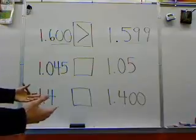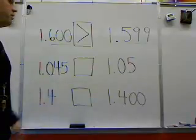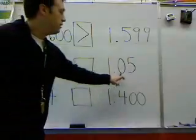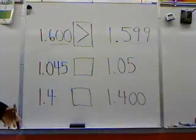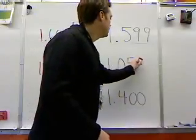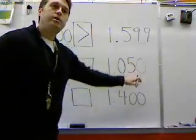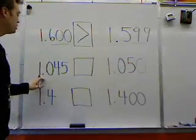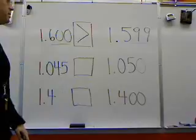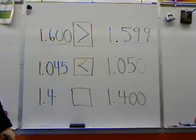We look at this case, we can do the exact same thing. We see that we've got 1 and 45 thousandths versus 1 and 5 hundredths. Well, that's a tough one to start to figure out. So what we can do is add in a zero, and now this number becomes 1 and 50 thousandths compared to 1 and 45 thousandths. Well clearly, 50 thousandths is larger than 45 thousandths.